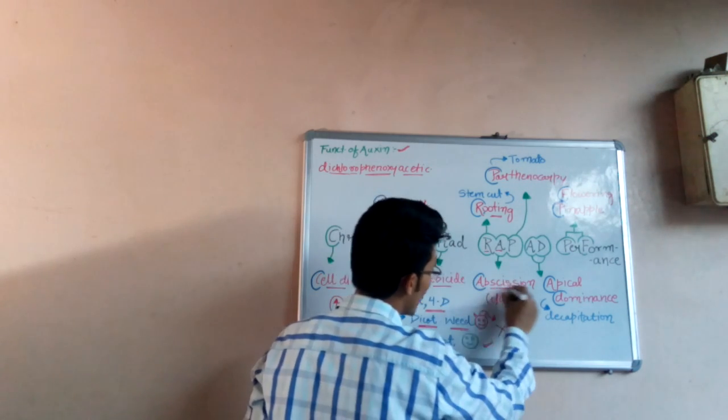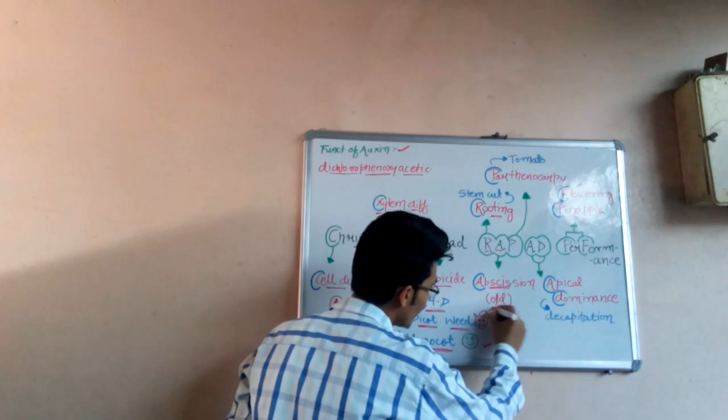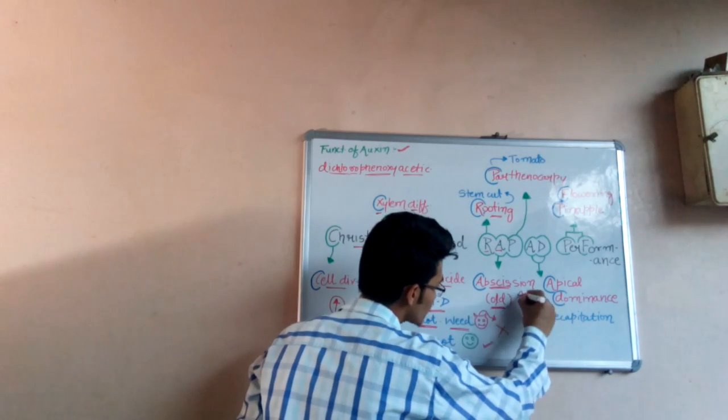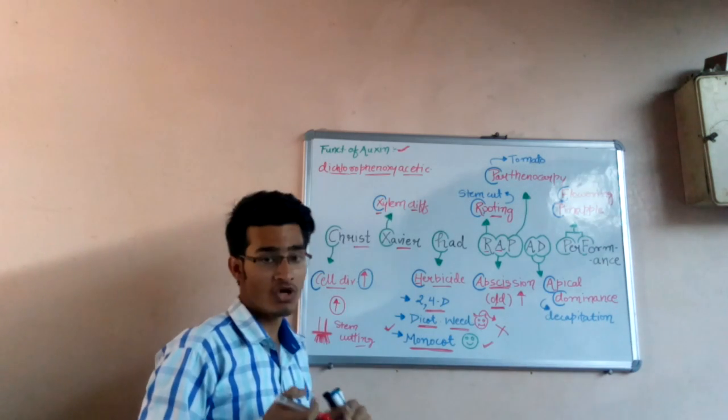A means abscission. Abscission means falling of parts. So abscission of old parts. It promotes abscission of old leaves as well as old fruits or matured fruits.